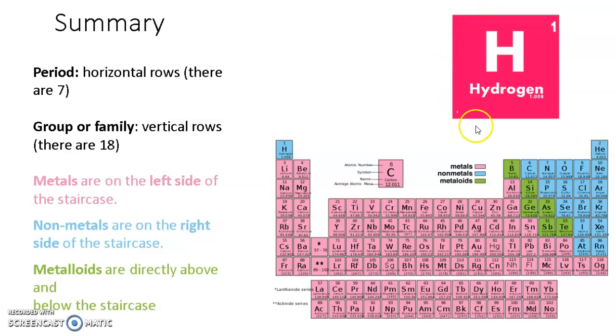And this is a particular box in a periodic table, which shows the name of the element, the symbol, the atomic number, and atomic mass.